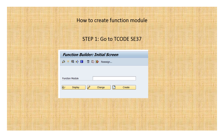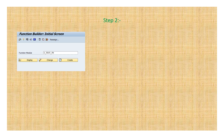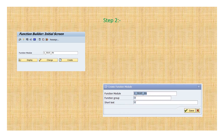Now we move to step two. Here I am creating a function module called ZET_TEST_FM. Once you click Create you get an option where you have to choose the function group name — as mentioned, all function modules must be stored in a function group. You also provide a short text description for the function module. After doing this, click Save.